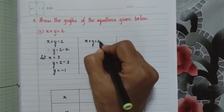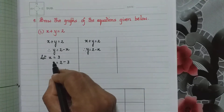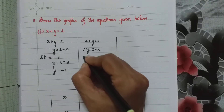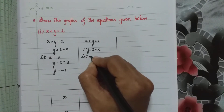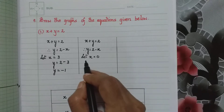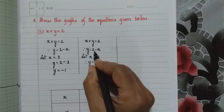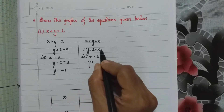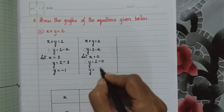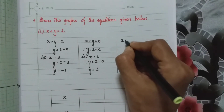Again with the equation x plus y equal to 2, therefore y is equal to 2 minus x. Next I take x as 0. So let x equal 0. Therefore y is equal to 2 minus 0, so y is equal to 2.